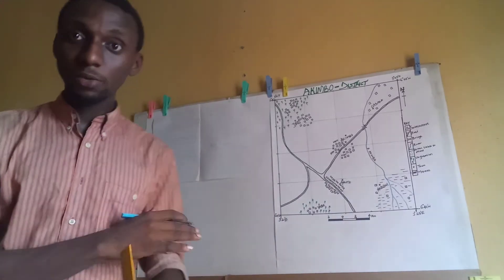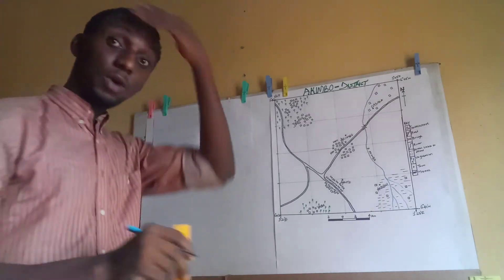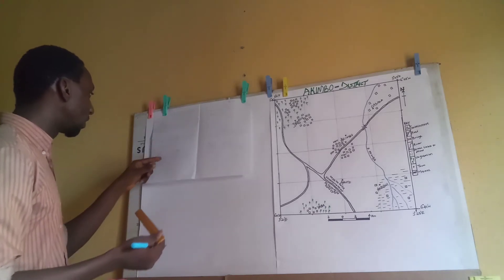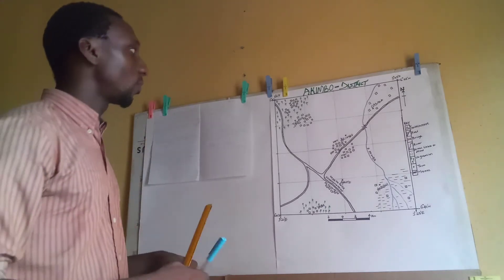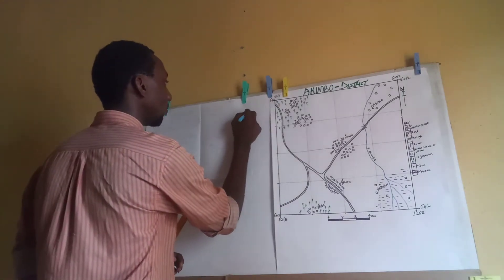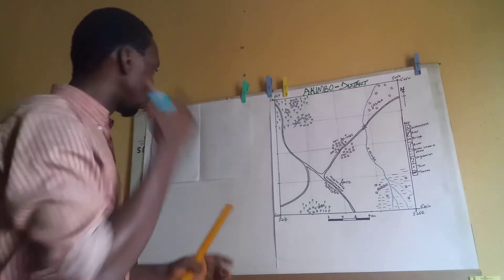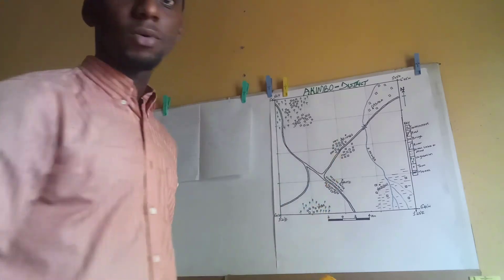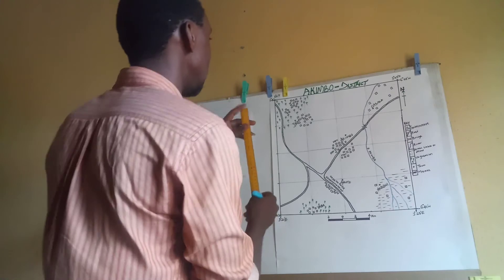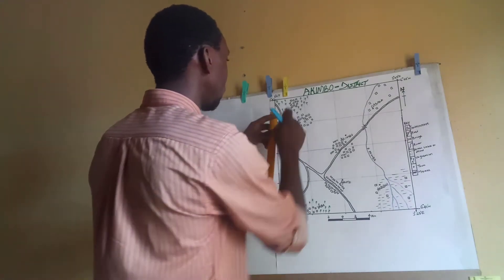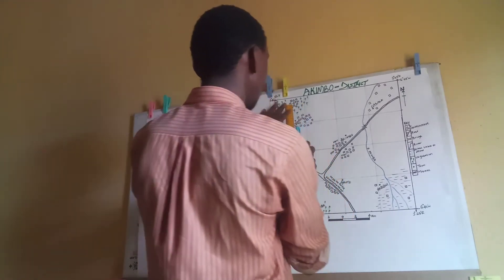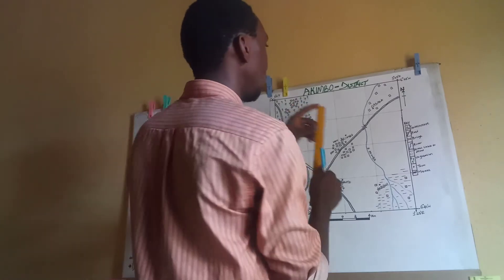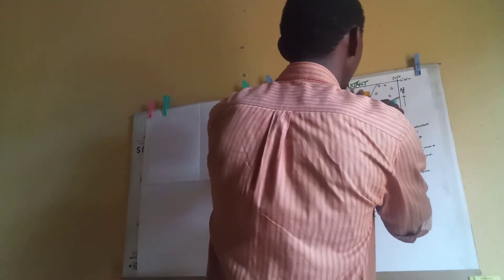Step number two says: locate both towns with a cardinal mark. You have east, west, north, and south — those are the cardinal points. Now look at your map. Where is Dengue? It is towards the northwest. I make a mark on Dengue. Remember from the key of the map we have been shown what a town is represented by. And where is Kasala? I make a mark there as well. Step number two is achieved.